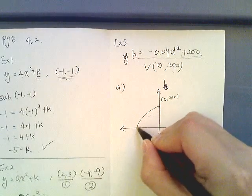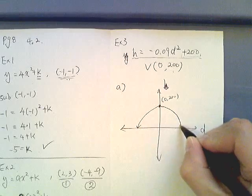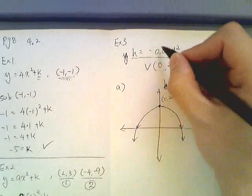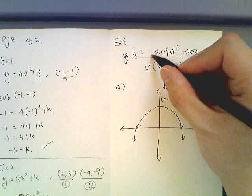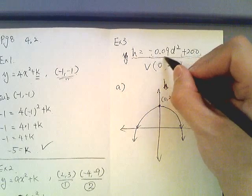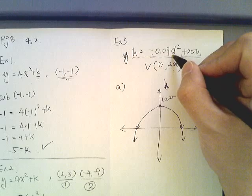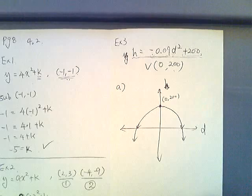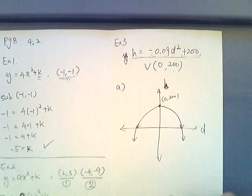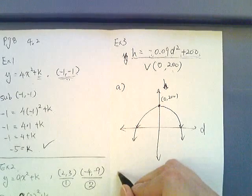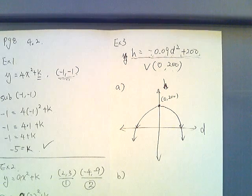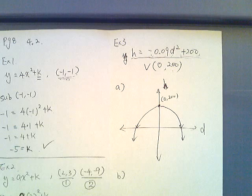So I'll say this is 0 comma 200 and this is going down this way. It goes down this way and the reason is, see the sign of the number in front of x or d or whatever the variable here is negative, so it's actually facing down. So drawing is complete.